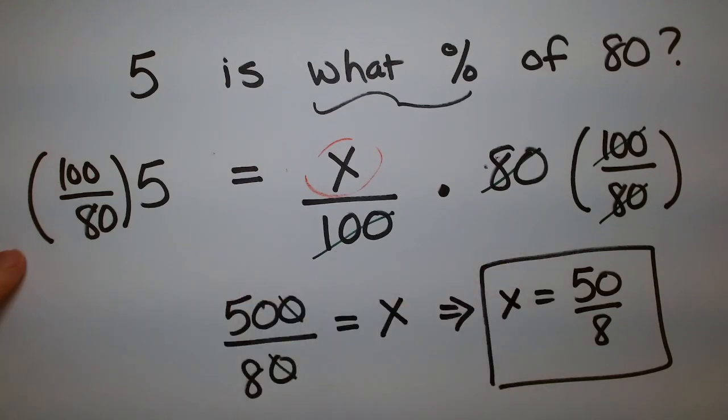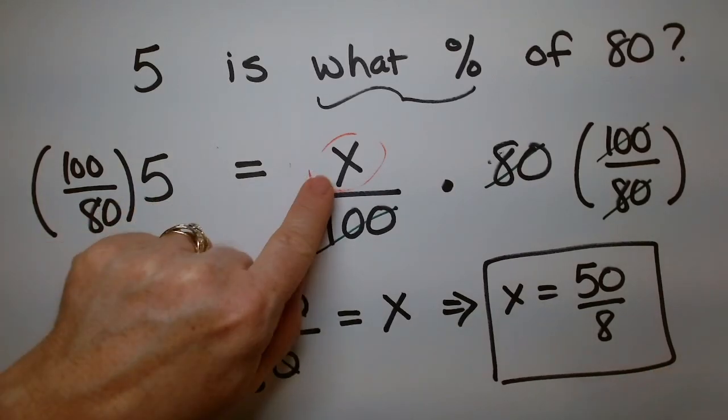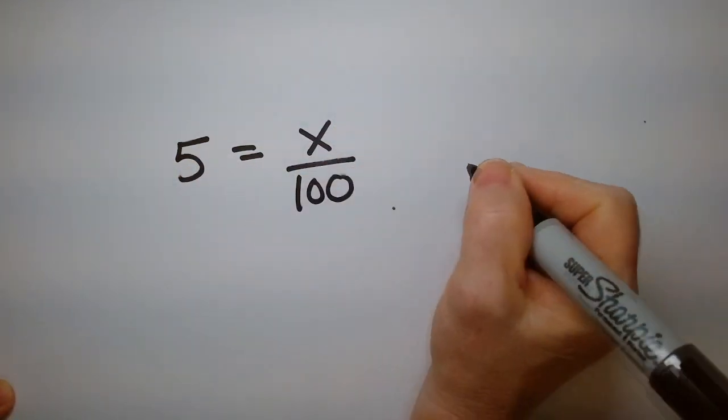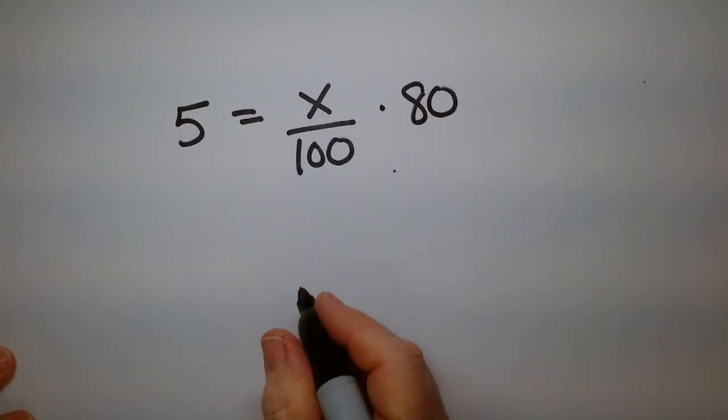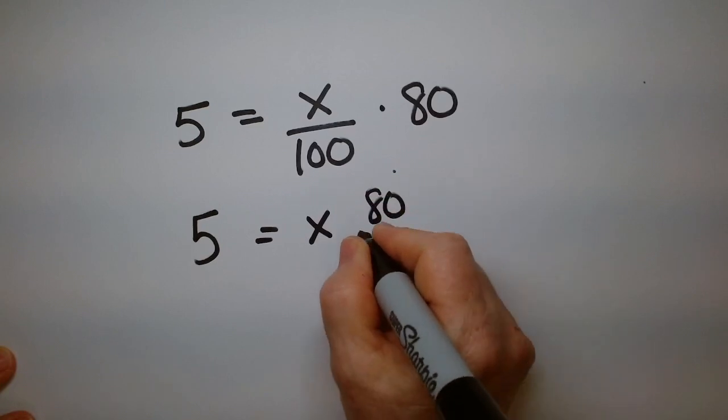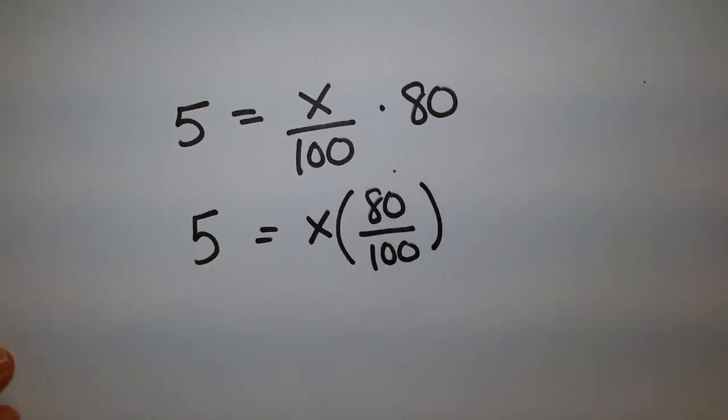Let me do this middle step a different way so it's a little cleaner for you to see. So I'm going to rewrite it as 5 equals X over 100 times 80. So write what we got when we were working on translating the words into math. So what I might do here is I might say 5 is equal to X 80 over 100. And just put these two together like that.